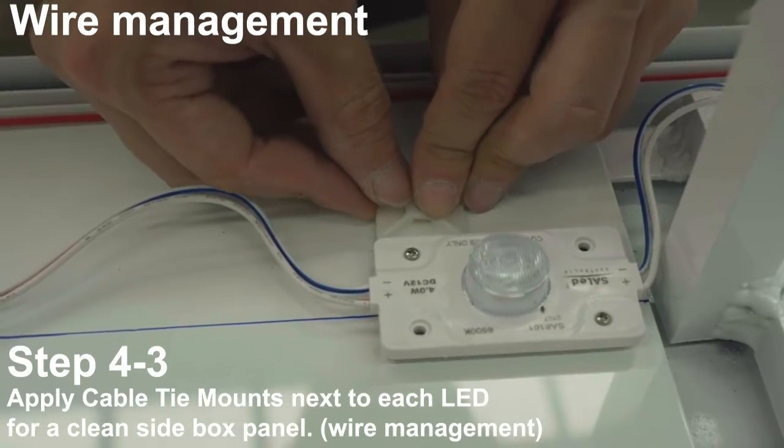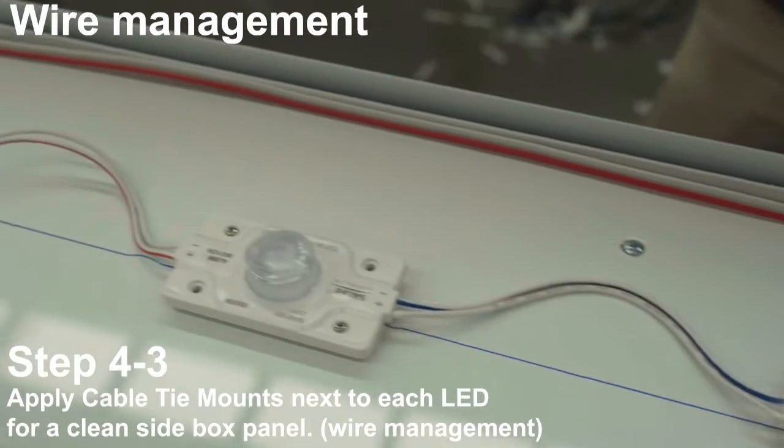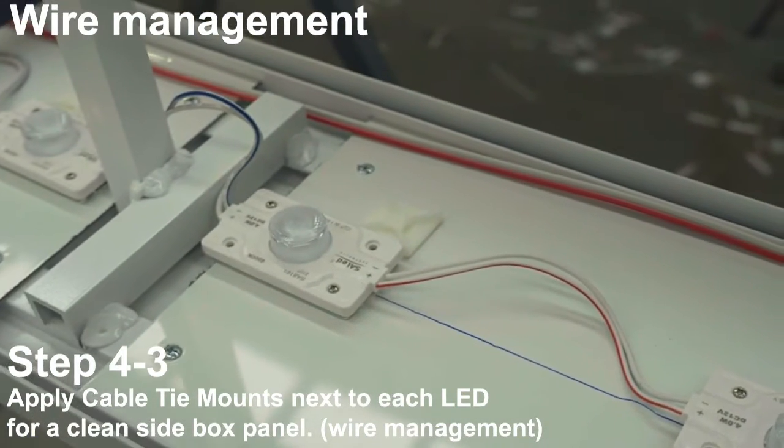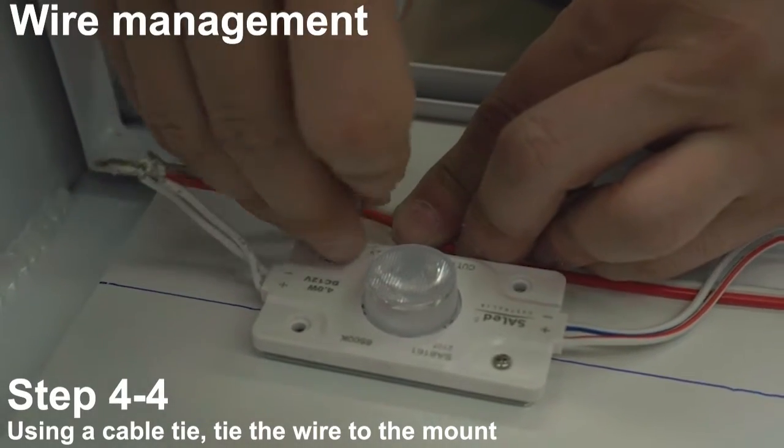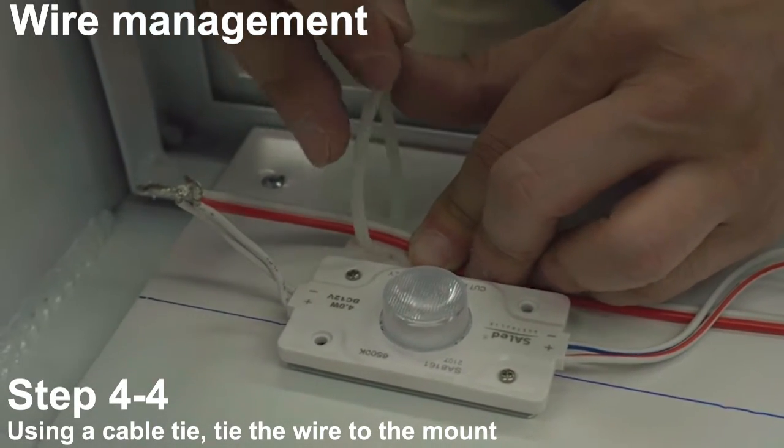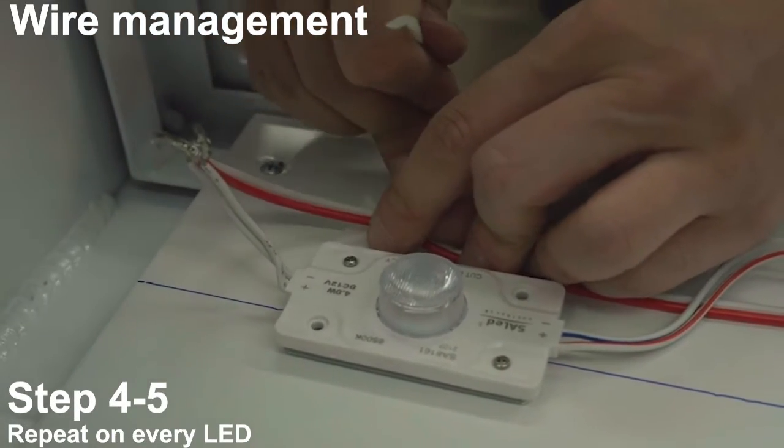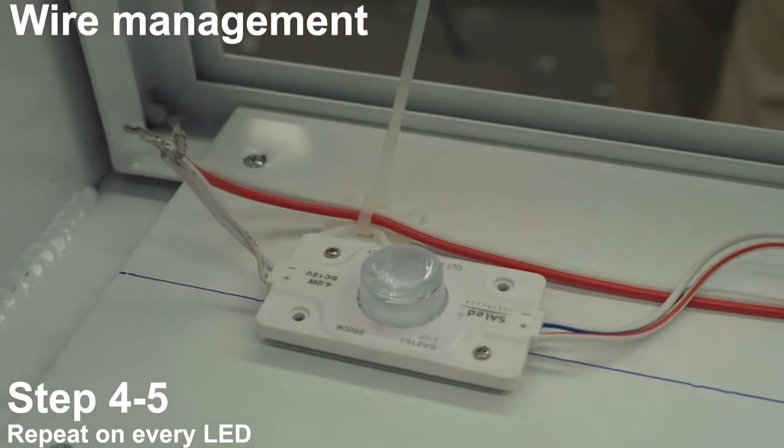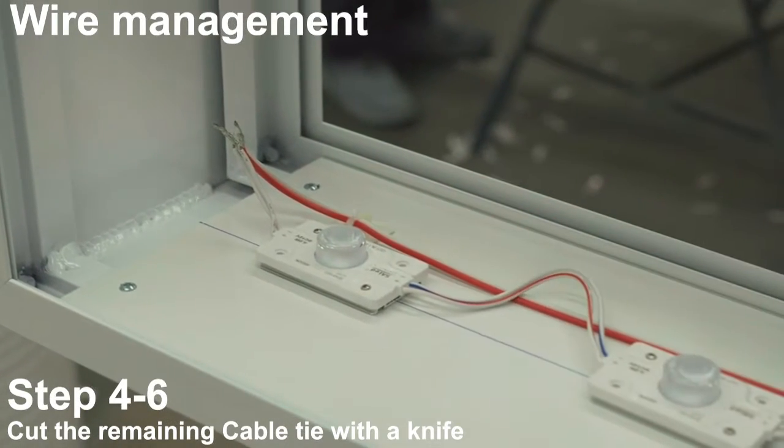Apply cable tie mounts next to each LED for a clean side box panel. Using your cable tie, tie the wire to the mount. Repeat on every LED. Cut the remaining cable tie with a knife.